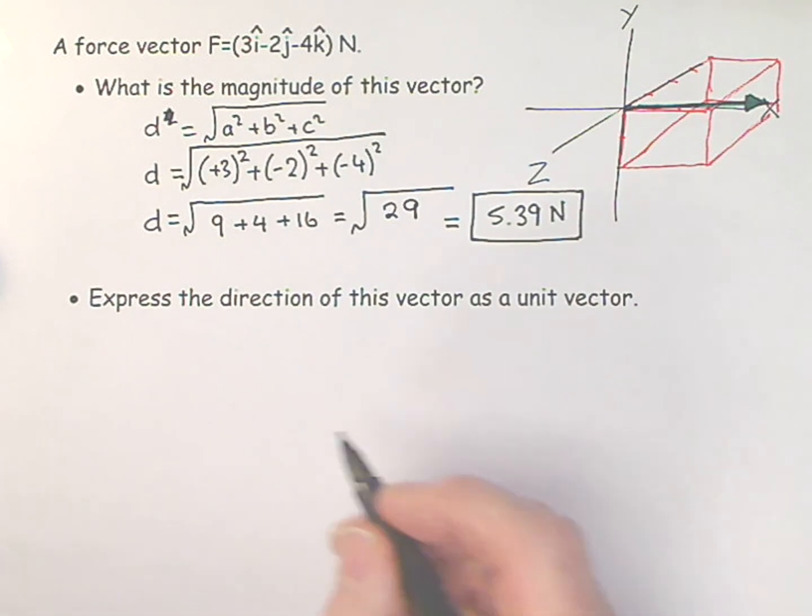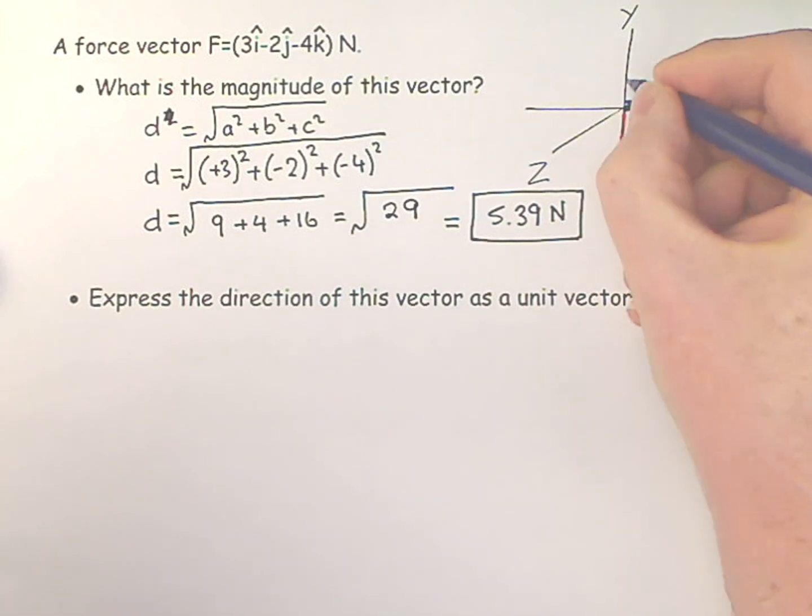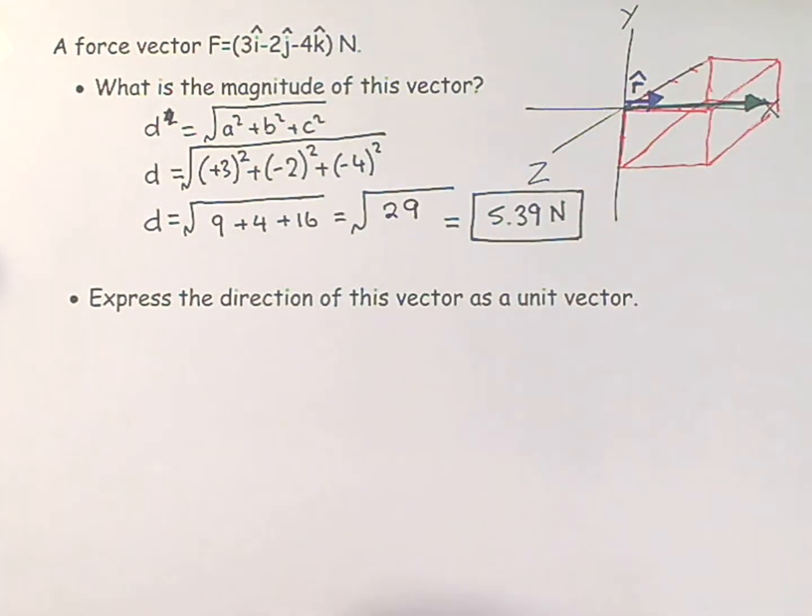So somehow I have to make this have the same direction but have a smaller magnitude. And the best way to do this, let's represent this by a little arrow like that, a little blue arrow. And let's call that our r hat, meaning a unit vector in a specific direction.